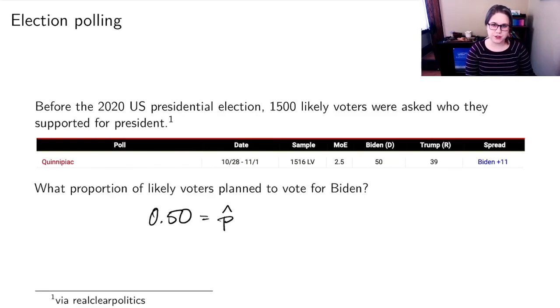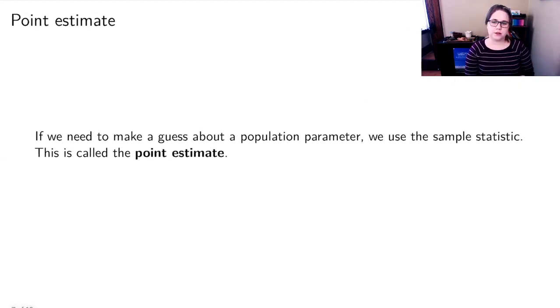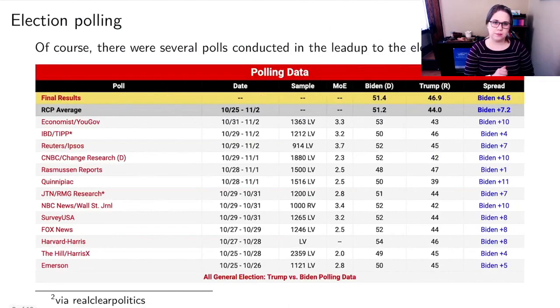We might want to make a conclusion about what's going to happen in the whole election with the entire population. But all we have is the information from that sample. So if we need to make a guess about a population parameter, our best guess is just going to be to use the sample statistic to use that one number, we call that a point estimate. So my point estimate based on that poll would be 50%.